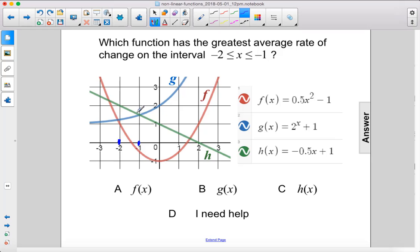The average rate of change for blue is going to be the greatest because the other graphs, the red graph and the green graph, are decreasing, so they're going to have negative rates of change. Whereas blue increases from here to here, so it increases this much.